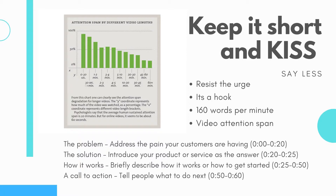Think of it this way: if you are on a date and you blurted out every single detail about yourself, there are no more fantastic surprises for your date to find out in the future. So keep some of the mystery to yourself for now. A tip for when you write your script is to aim for about 160 words — that is usually the reading speed for about 60 seconds of animation. If you need a little bit more time, 90 to 120 seconds can still be very effective. Just remember, the longer the video goes on, the higher the chance the possible customer will get bored and leave.